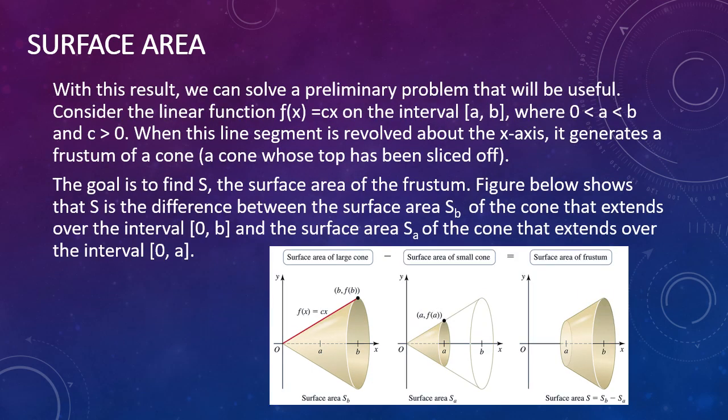With the result of the cone, we can solve a preliminary problem that will be useful. Consider the linear function f of x equals c times x on the interval from a to b, where 0 is less than a is less than b, and c is greater than 0. When this line segment is revolved around the x-axis, it generates a frustum of a cone — a cone whose top has been sliced off, as you can see in the last image on the right. The goal is to find s, the surface area of the frustum. The figure below shows that s is the difference between the surface area s sub b of the cone over the interval 0 to b and the surface area s sub a of the cone over the interval 0 to a.